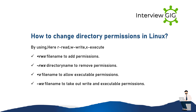How to change directory permissions in Linux? By using: r for read, w for write, x for execute. chmod +rwx filename to add permissions. chmod -rwx dirname to remove permissions. chmod +x filename to allow executable permissions. chmod -wx filename to take out write and executable permissions.